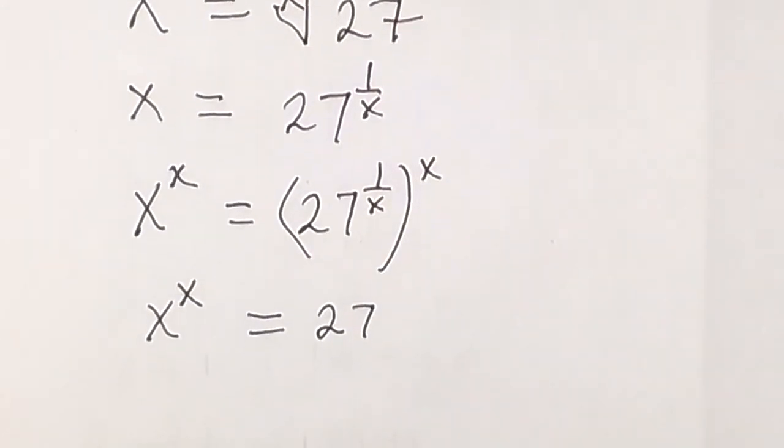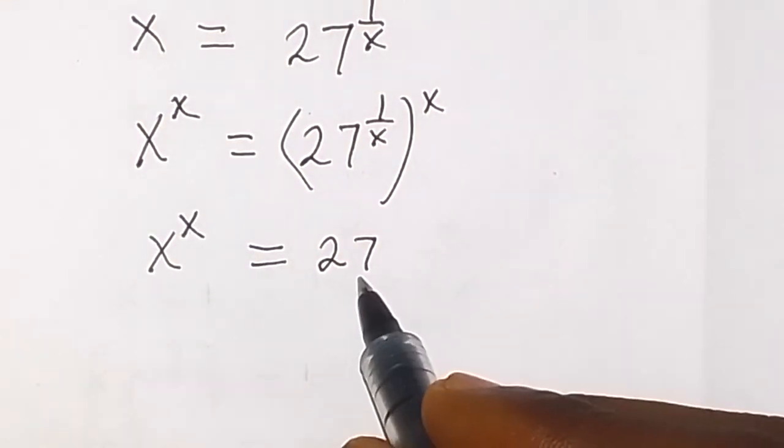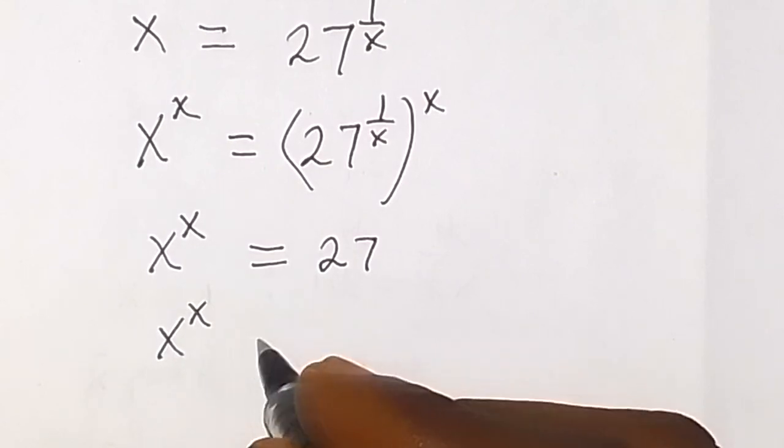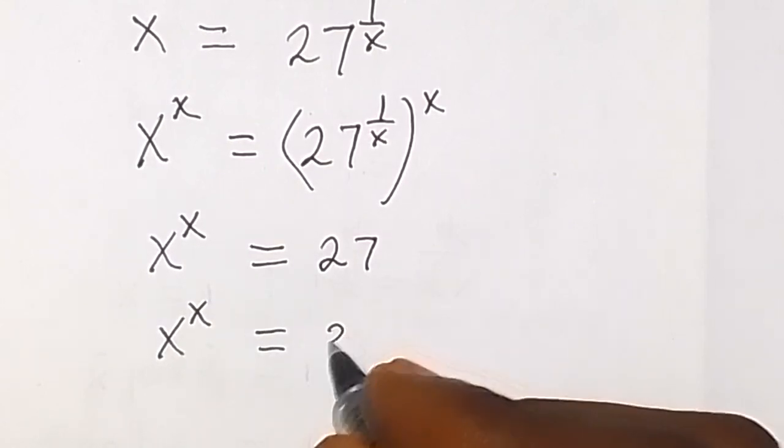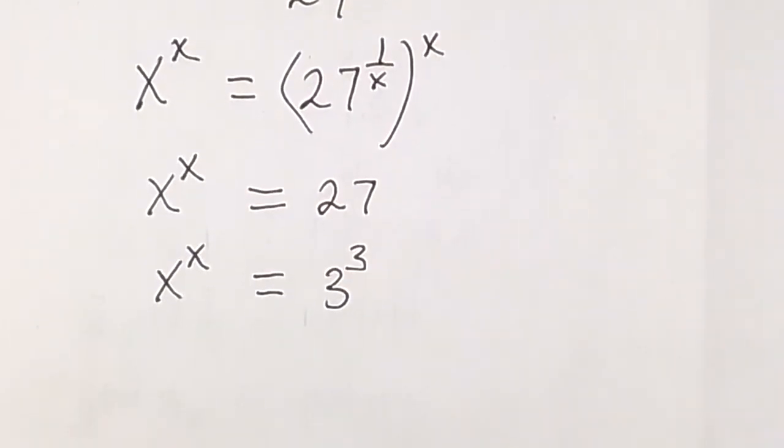Now we can write 27 as 3 raised to power 3. Now x raised to power x equals to 3 raised to power 3. And from there we can see that we have a number